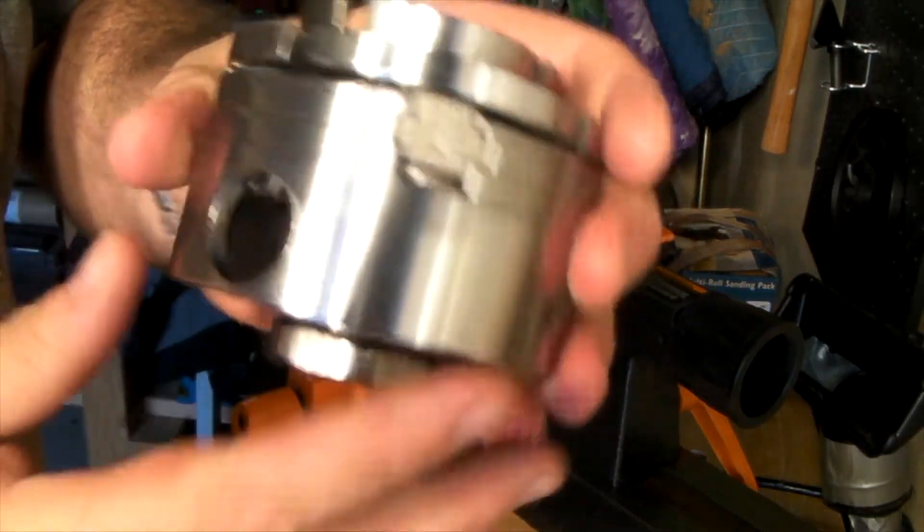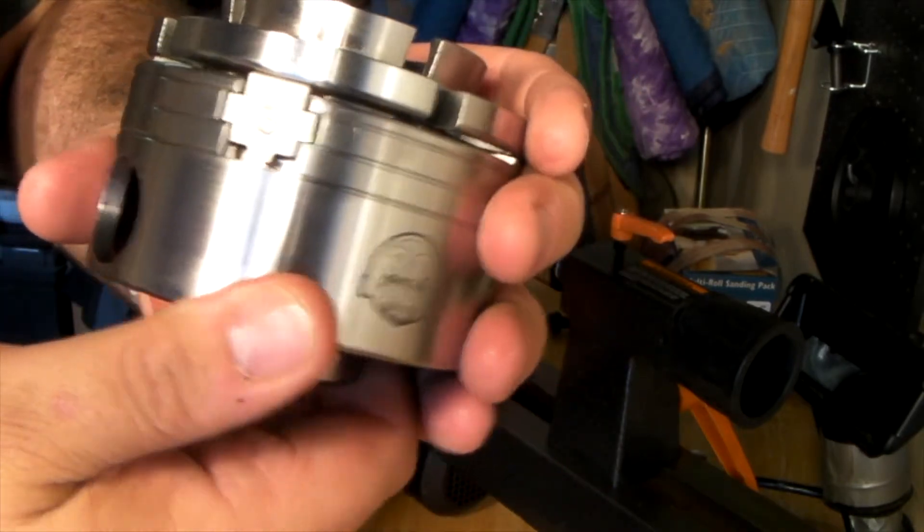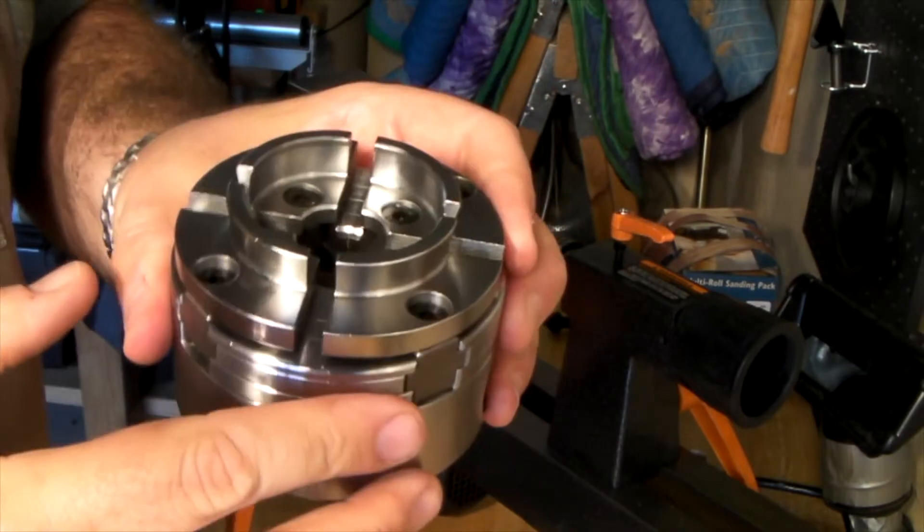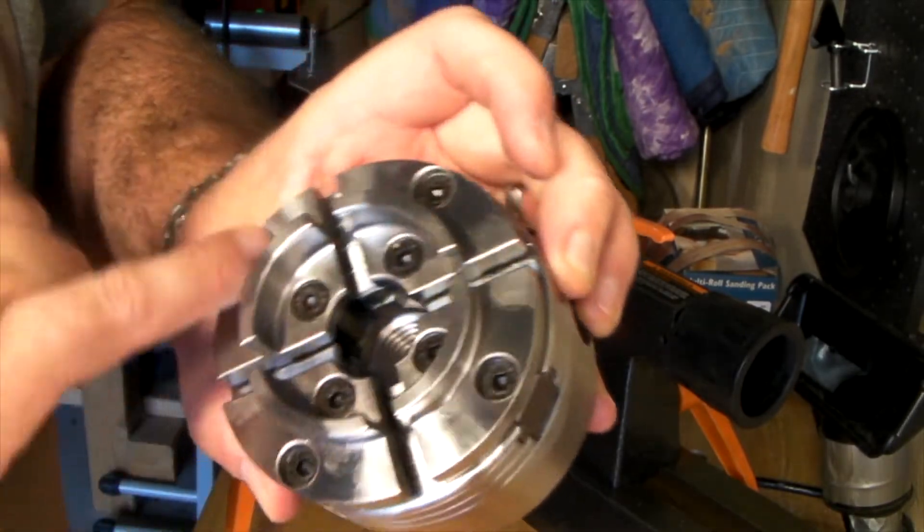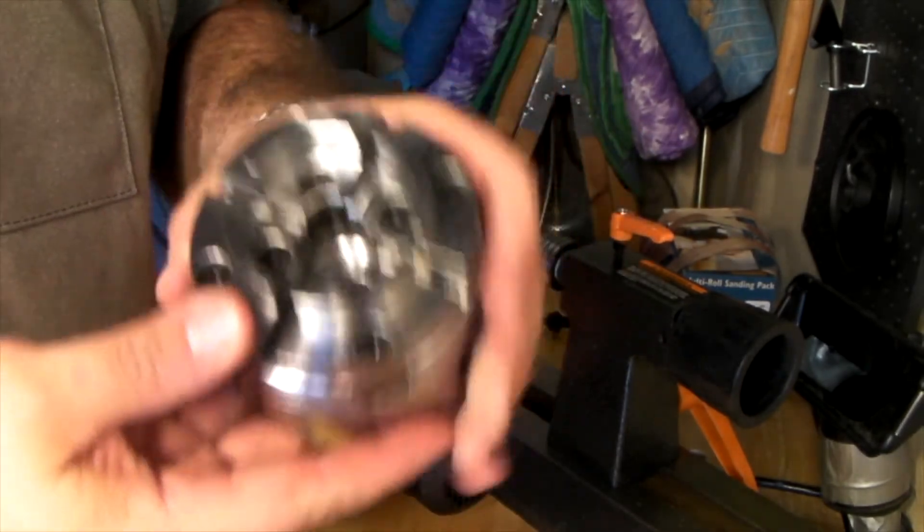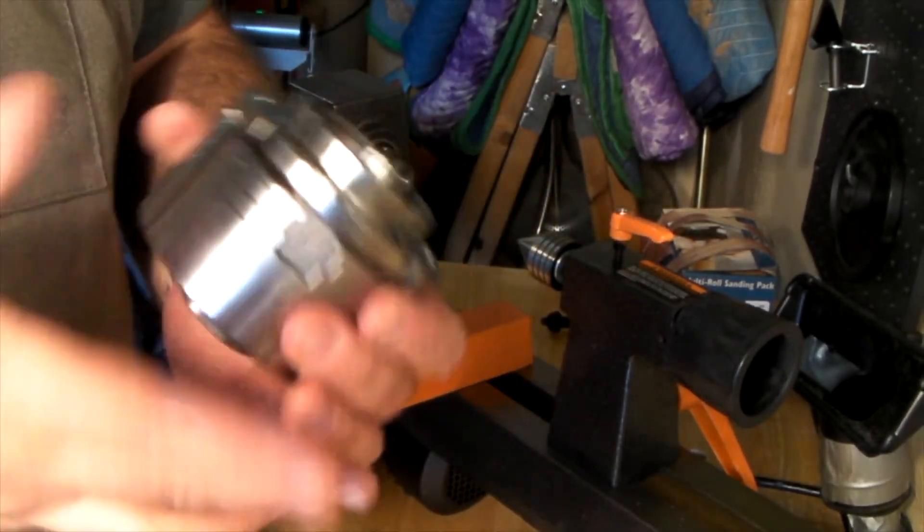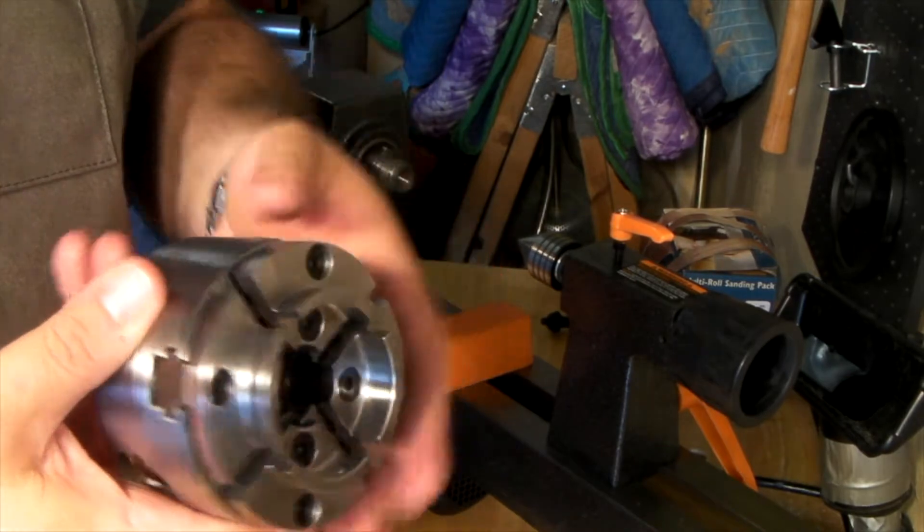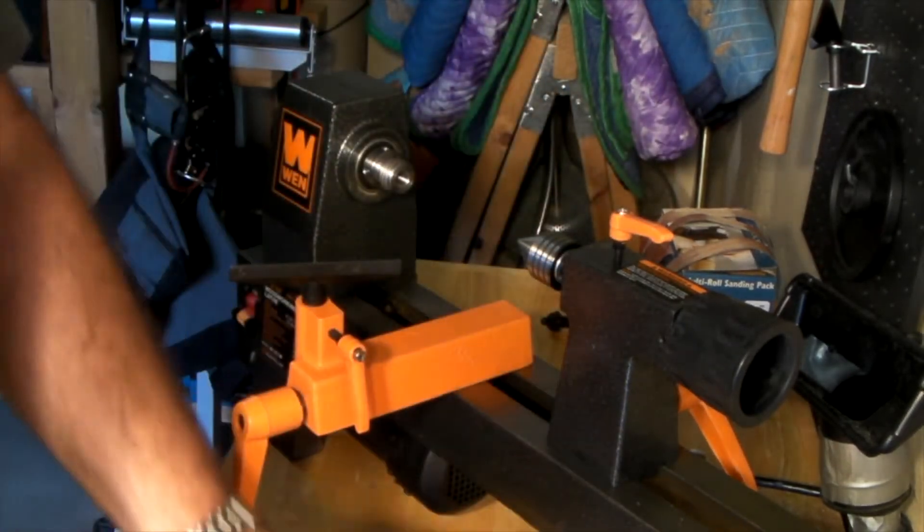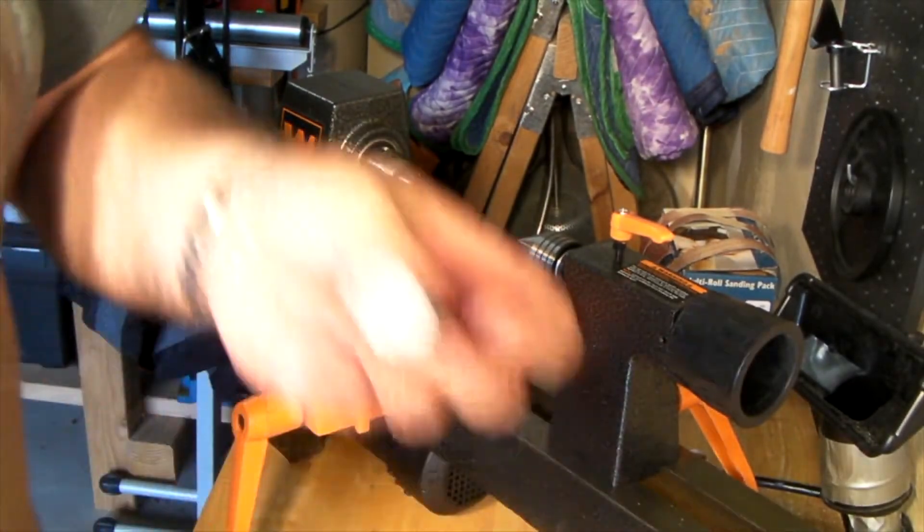Now, you'll notice there's some numbers here. One, two, three, back to four. Those actually correspond to numbers that are on the underside of these faceplates here. Now, those holes right there, the keys, they're designed to come off. And what I did, I made the mistake of not looking at the instructions and just throwing this thing together, and I put them on the wrong spots. One does have to go with one, two has to go with two, so on and so forth.